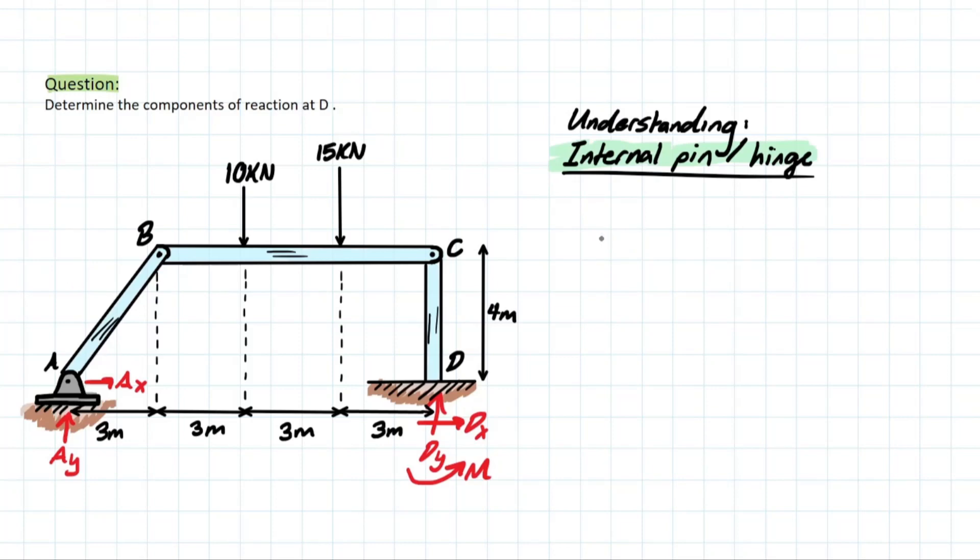So let's say we had two members connected at a pin. And let's imagine that we separate the members at the pin, and we are left with two individual members. So what is happening? How do I analyze this now? Well, we have two members, and we need to remember equilibrium.